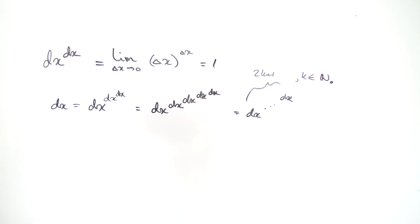And what happens if this tower had an even number of dx's? Well, it wouldn't be dx anymore. It would just be one. So for example, one is equal to dx raised to the dx, which is equal to dx raised to dx raised to dx raised to dx. Or in general, just dx raised to the power of dx. But this is an even number, so perhaps 2k.